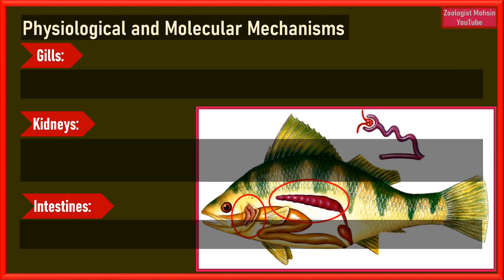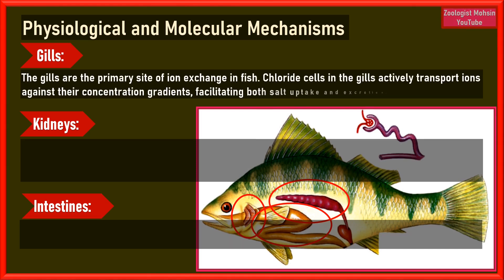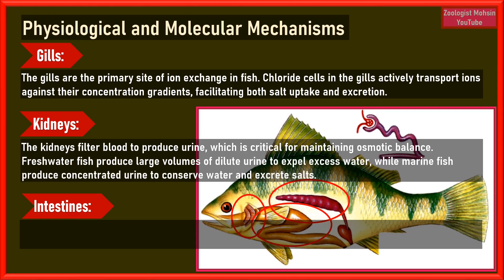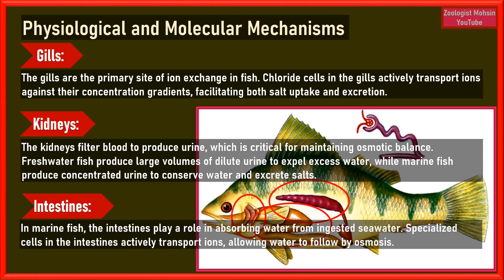The gills are the primary site of ion exchange in fish. Chloride cells in the gills actively transport ions against their concentration gradients, facilitating both salt uptake and excretion. The kidneys filter blood to produce urine critical for maintaining osmotic balance — freshwater fish produce large volumes of dilute urine to expel excess water, while marine fish produce concentrated urine to conserve water and excrete salts. In marine fish, the intestines also play a role in absorbing water from ingested seawater, with specialized cells actively transporting ions and allowing water to follow by osmosis.